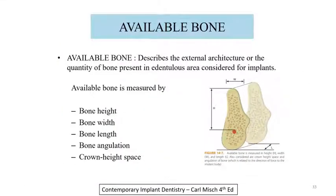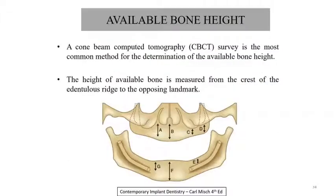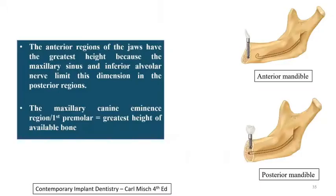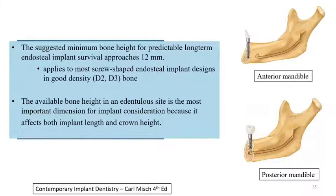Coming to available bone: it describes the external architecture and quantity of bone present in the edentulous area considered for implant. Available bone height is most commonly determined by CBCT survey, measured from the crest of the edentulous ridge to the opposing landmark. The anterior region of the jaw has the greatest height; the maxillary sinus and inferior alveolar nerve limit this dimension in the posterior region. The maxillary canine eminence region or first premolar area has the greatest available bone height. The suggested minimum bone height for predictable long-term implant survival is 12 mm.